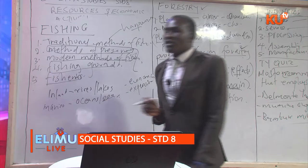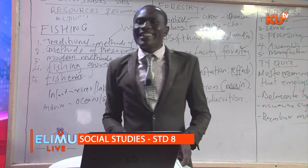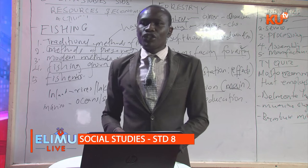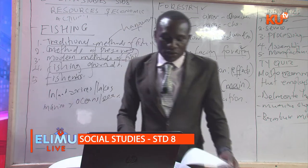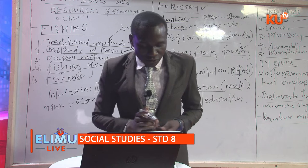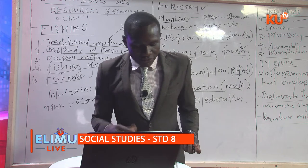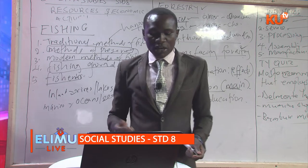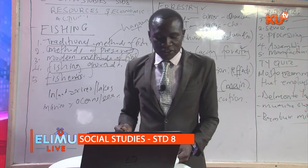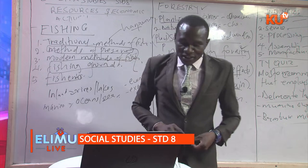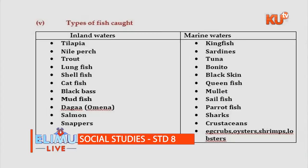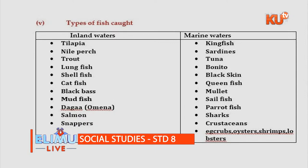On fisheries, you should know the fish caught in marine and in inland fishing grounds. Inland fisheries include tilapia, Nile perch, trout, lungfish, shellfish, catfish, blackfish, mudfish, daga (which is omena), salmon, and snapper. Marine fisheries include kingfish, sardines, tuna, bonito, blackskin, queenfish, mullet, sailfish, parrot, crabs, oysters, shrimps, and lobsters.